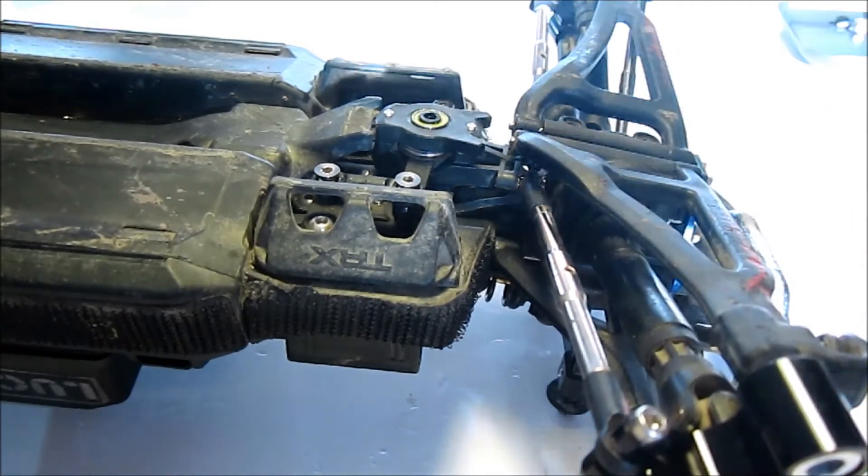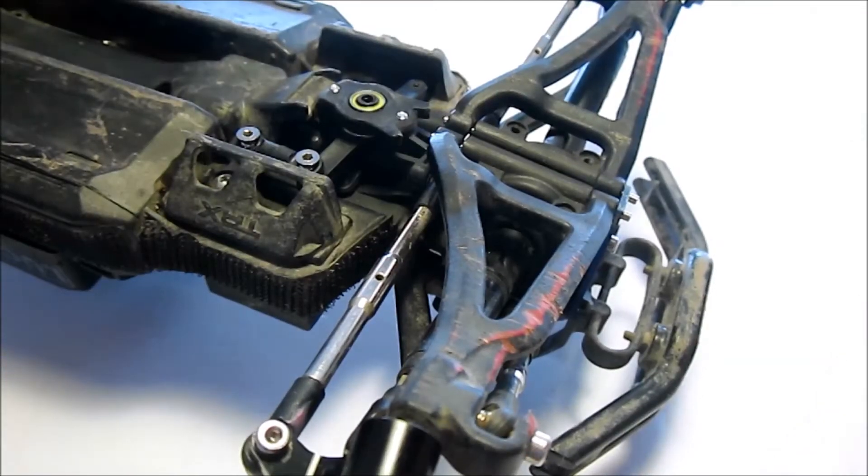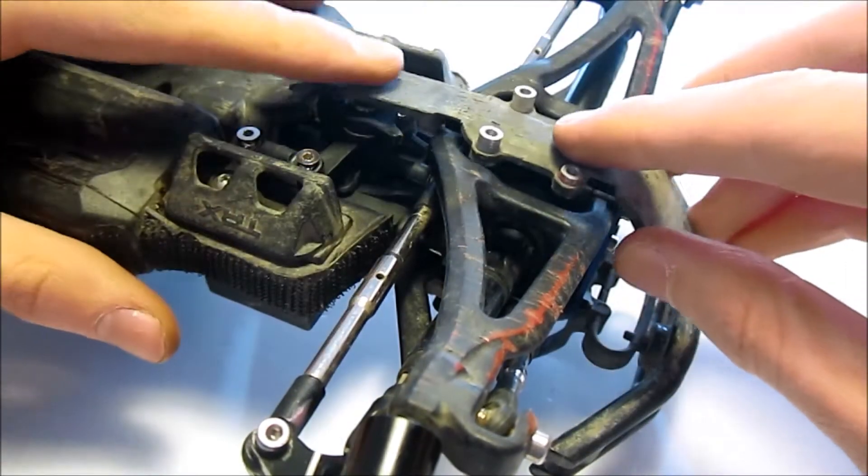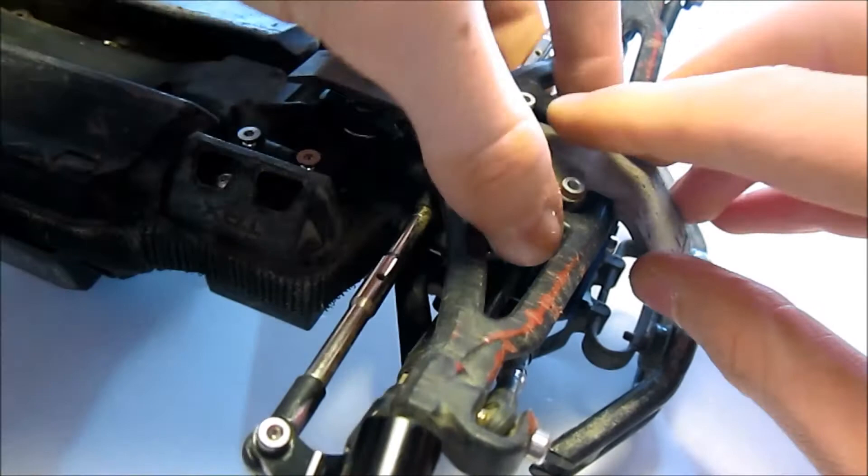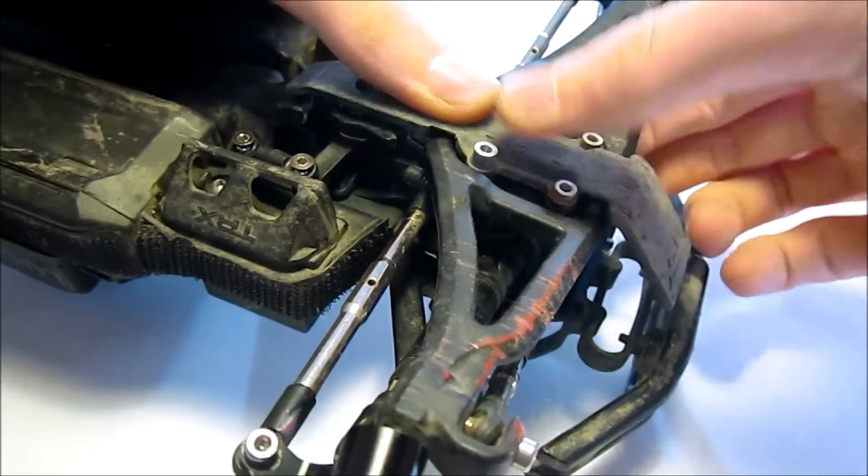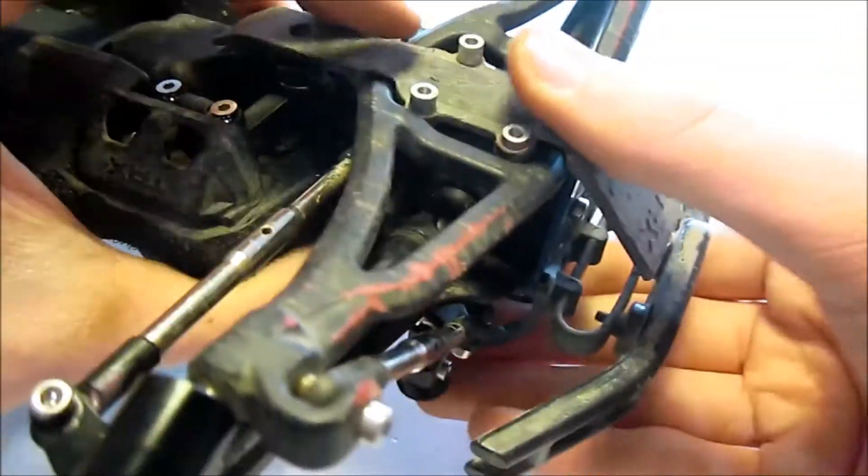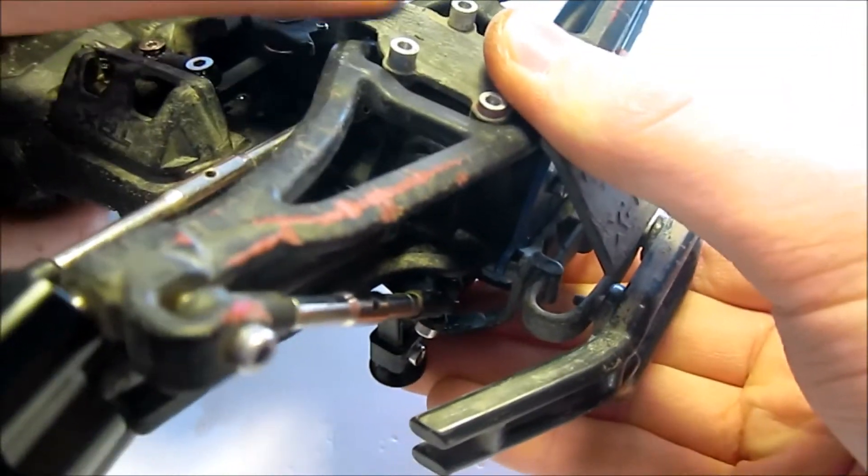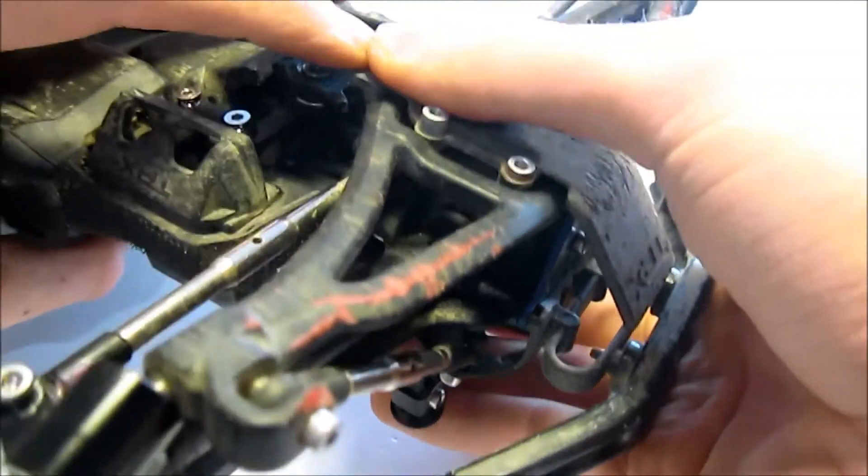Let's start with the front. Take the skid plate, lay it down there, push the A-arms, and then click it in. It should go over these hinge pins in the front right there and also in the back.